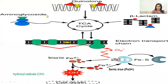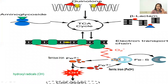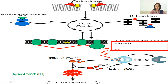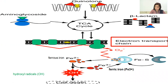Now we will understand this diagram. We have drugs — quinolones, aminoglycosides, beta-lactams. What are their bactericidal effects? They will basically hyper-activate the electron transport chain.